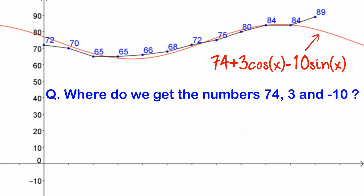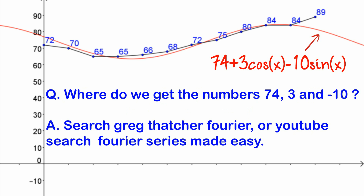The second question — which is a really good one — is where do we get the numbers 74, 3, and negative 10? The 74 is easy: that's just the average of the data. But where do we get the 3 and the negative 10? This goes beyond the video today. The simple answer is that I was lazy and used a website — you can find it by searching Greg Thatcher Fourier. That's actually really useful because you can play around with different curves and see the effect of adding them together. If you understand integral calculus and found this video fairly easy, you could also look at my video Fourier Series Made Easy.